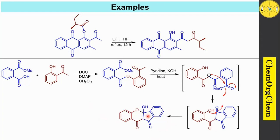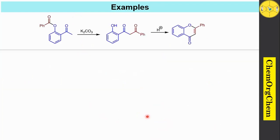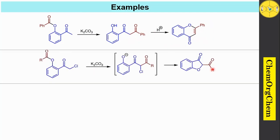This type of cyclization reaction is also possible in the Baker-Venkataraman rearrangement. Consider this next example: when you use potassium carbonate, it readily undergoes Baker-Venkataraman rearrangement, and then followed by when you use acid, it readily undergoes cyclization. The carbonyl oxygen is readily protonated by acid, and this hydroxy group attacks this carbonyl carbon, producing a tetrahedral intermediate, which then abstracts a proton followed by loss of a water molecule to produce this corresponding product.